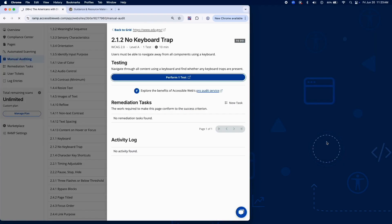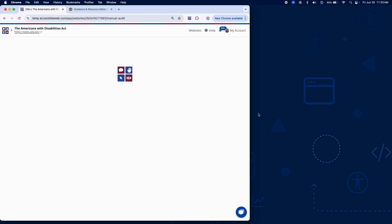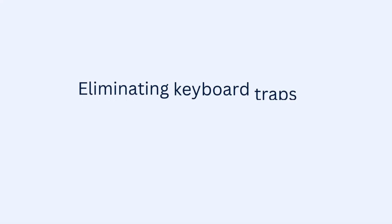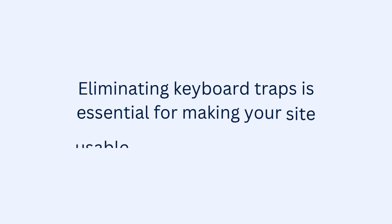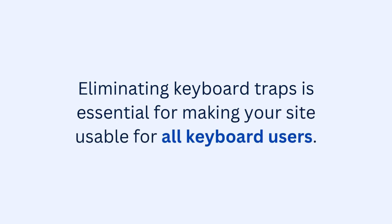And that's it for testing Success Criterion 2.1.2 using RAMPS Audit Grid and Chrome extension. Eliminating keyboard traps is essential for making your site usable for all keyboard users.